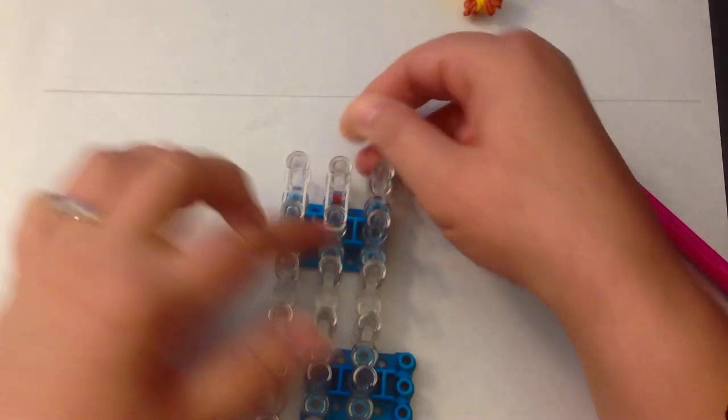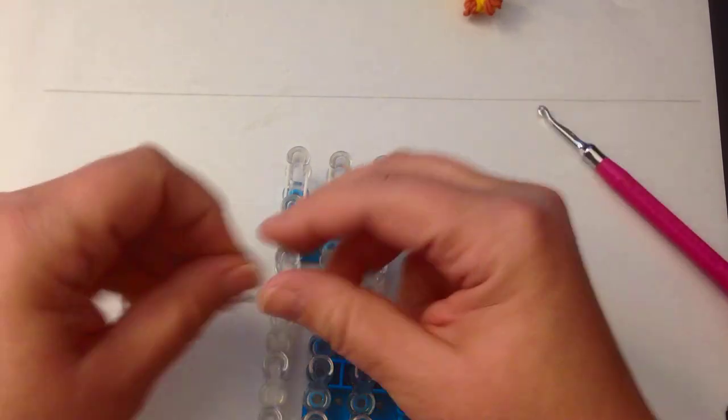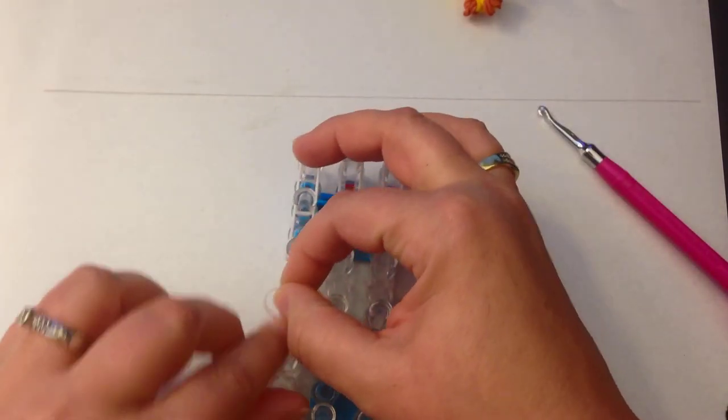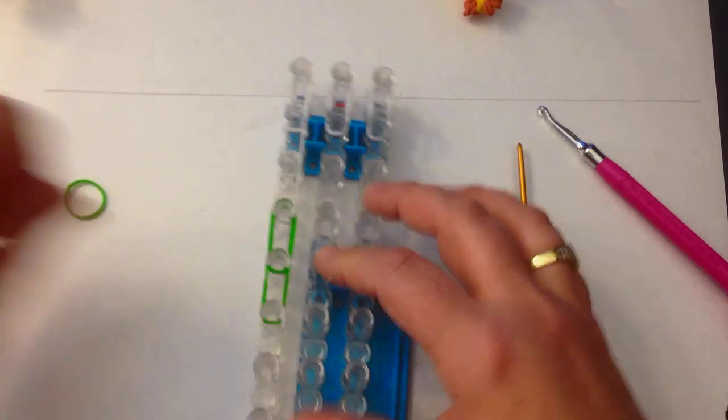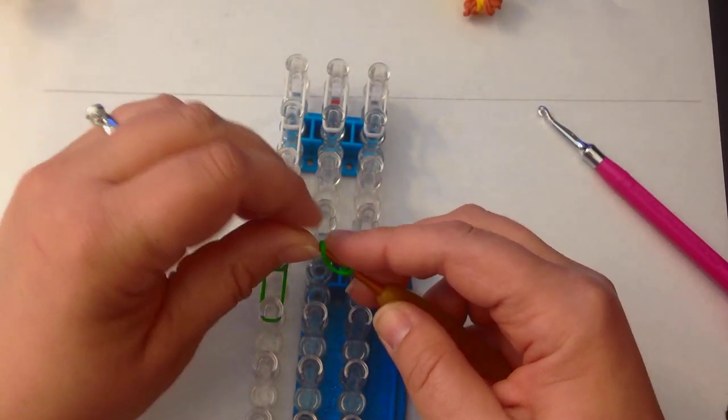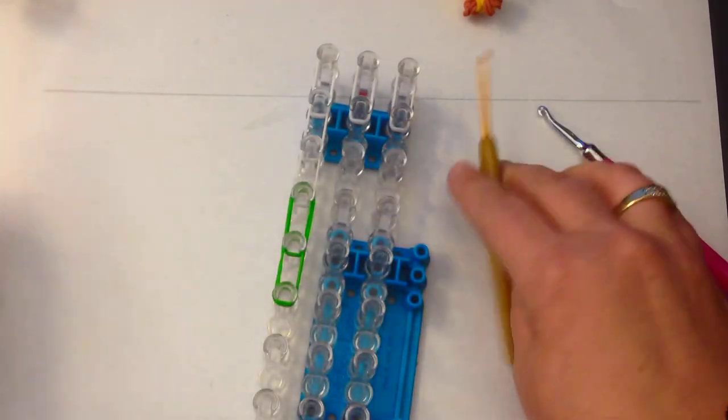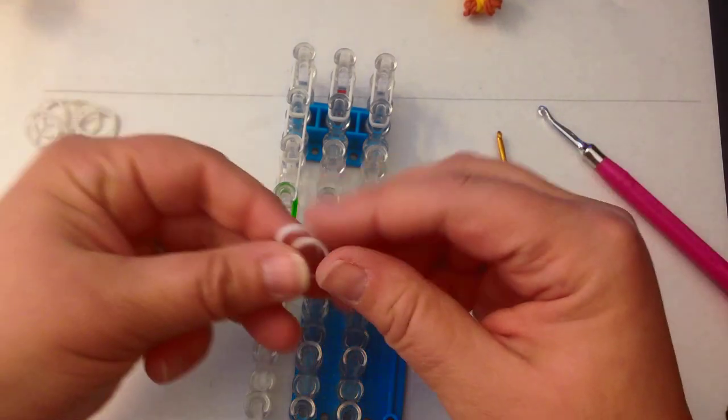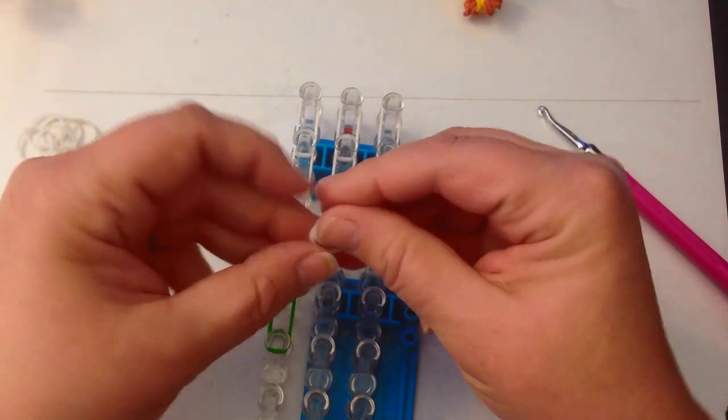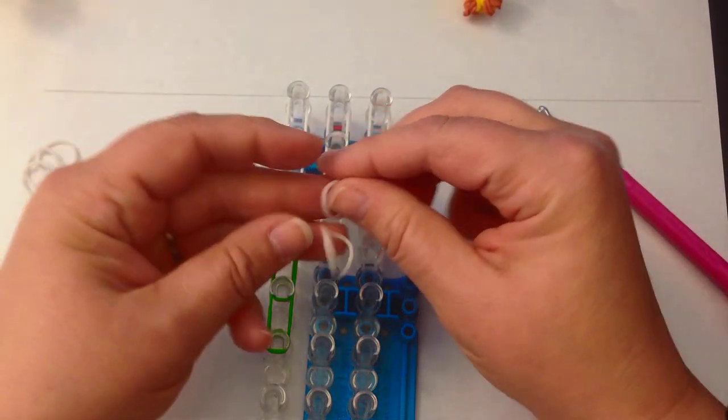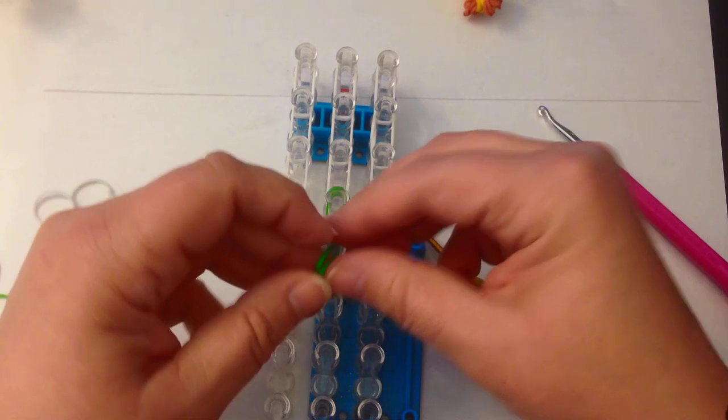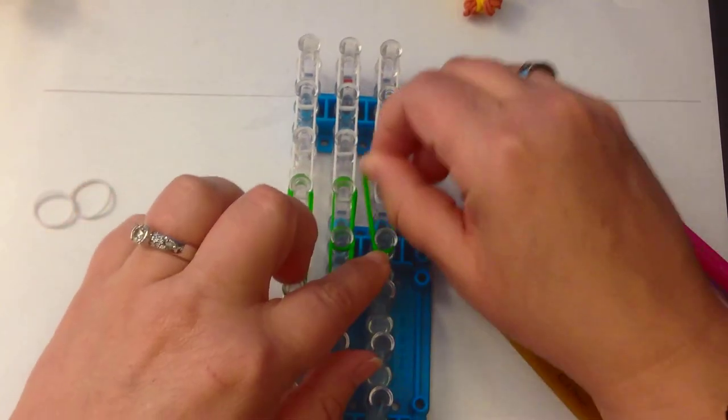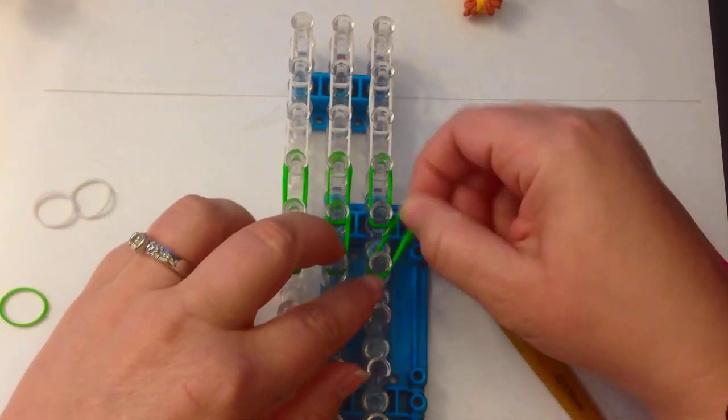We are going to be doing 12 rows. Okay, so we're going to start using double bands, which is two bands that you're going to place on the pegs together as if they were one. We will do our first three columns.